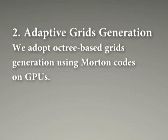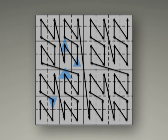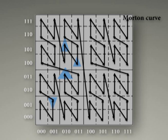We generate octree-based grids using Morton codes on GPUs. Here is a 2D illustration. We first construct 64 lattices and quantize the XY coordinates for each triangle's barycenter. Then we compute Morton code for every triangle by interleaving these quantized coordinates.